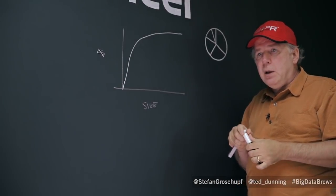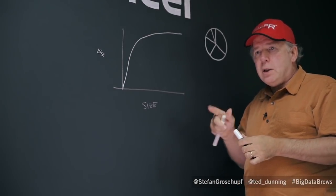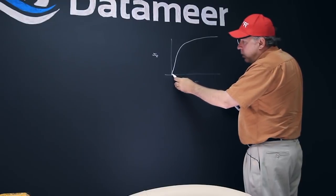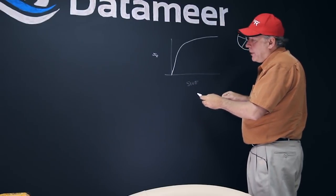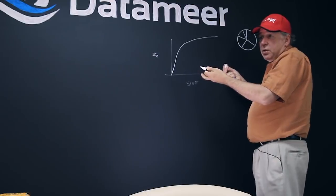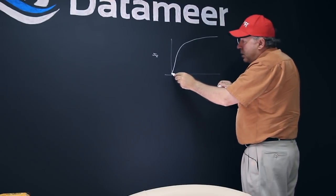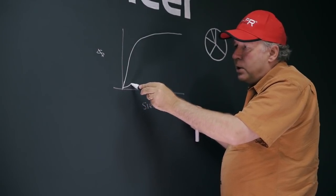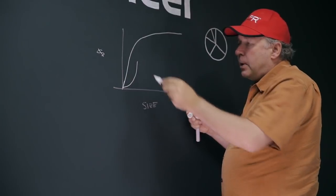And now traditionally cost does just the opposite. You buy one machine so you have a non-zero very small price. And it's flat for a little while. You just use more of that machine. But then the cost of coordination in traditional systems goes up like that.